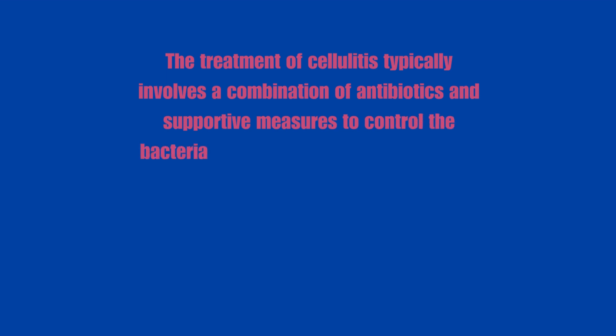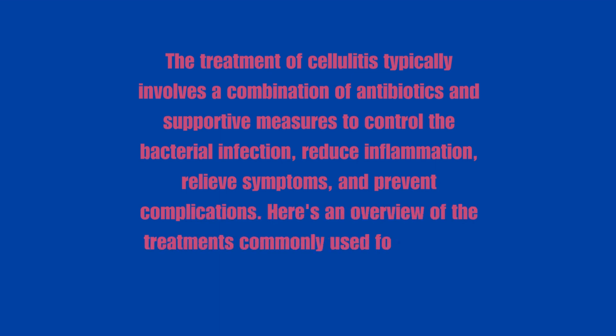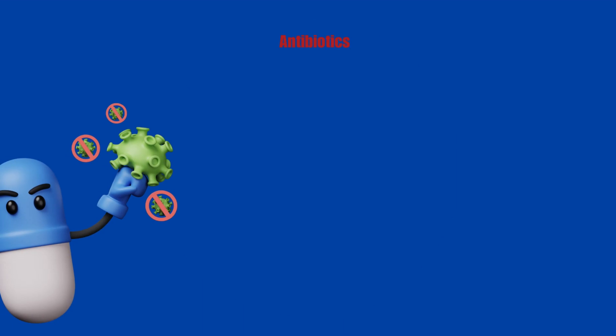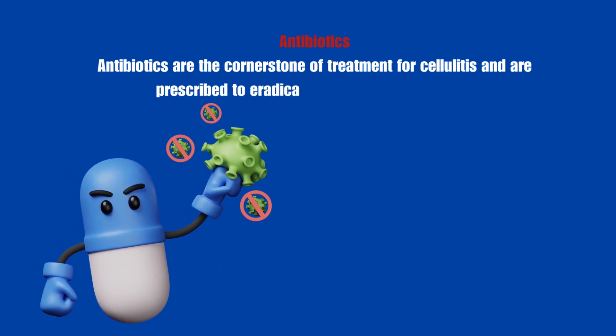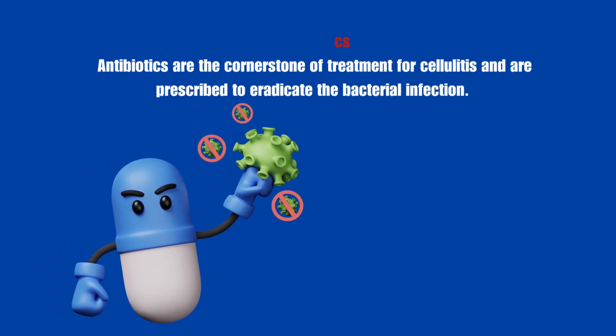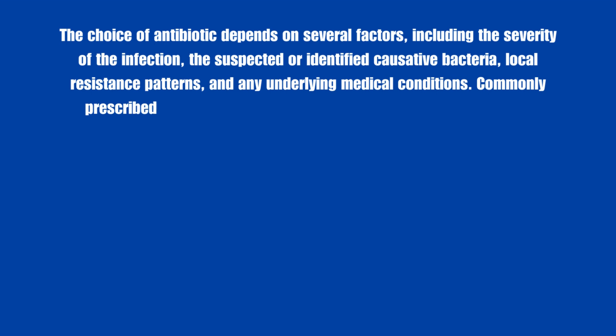The treatment of cellulitis typically involves a combination of antibiotics and supportive measures to control the bacterial infection, reduce inflammation, relieve symptoms, and prevent complications. Antibiotics: Antibiotics are the cornerstone of treatment for cellulitis and are prescribed to eradicate the bacterial infection. The choice of antibiotic depends on several factors, including the severity of the infection, the suspected or identified causative bacteria, local resistance patterns, and any underlying medical conditions.